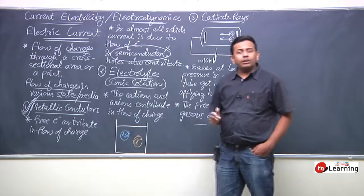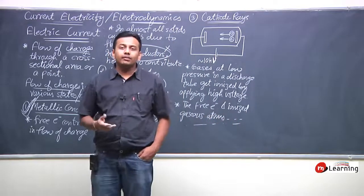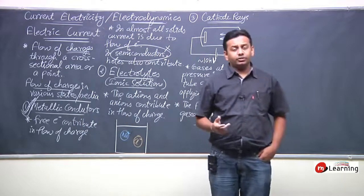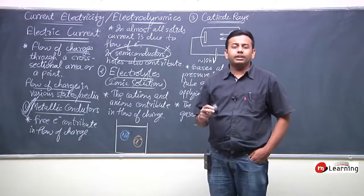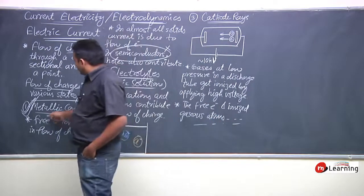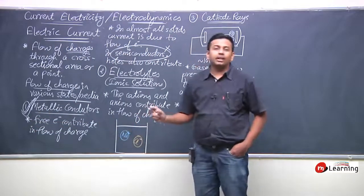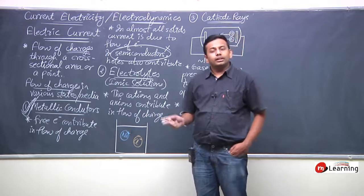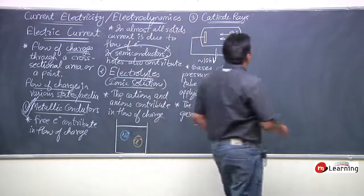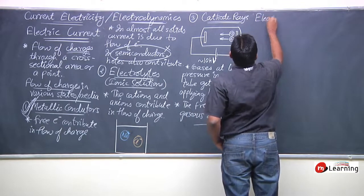This is how electric current is developed in various materials and various states. Now we look at the metallic conductors portion in more detail and start to analyze electric current in metallic conductors.